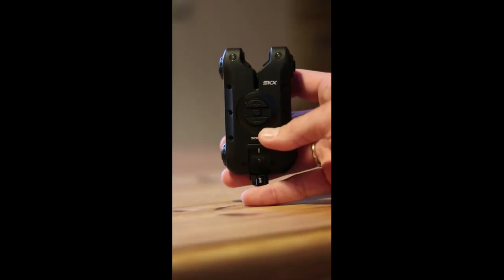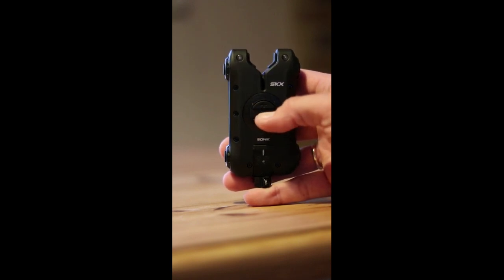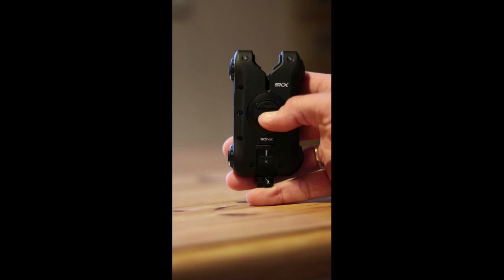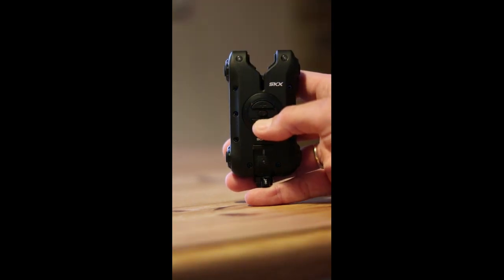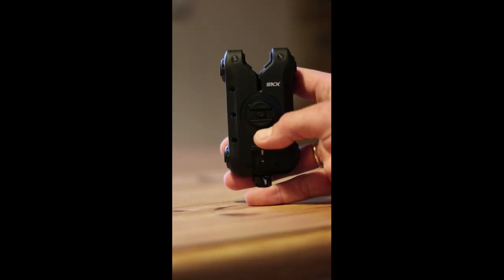Okay then, so here we've got the alarm head then for the SKX alarms. So we switch it on by the power button in the centre. So press and hold that and the LEDs at the top will illuminate. Now they're multi-function colour, so you can select whatever colour you want on those.